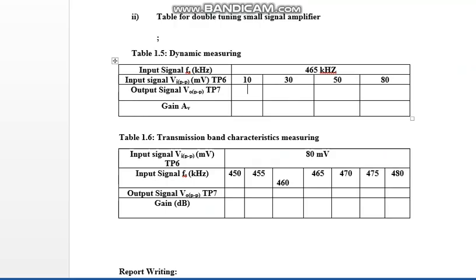The output voltage obtained is 7.76 millivolts. To find the gain, divide by the input: 7.76 divided by 10 = 0.776, approximately 0.78. This means the gain in the double-tuned amplifier circuit has been improved compared to the single-tuned amplifier circuit.